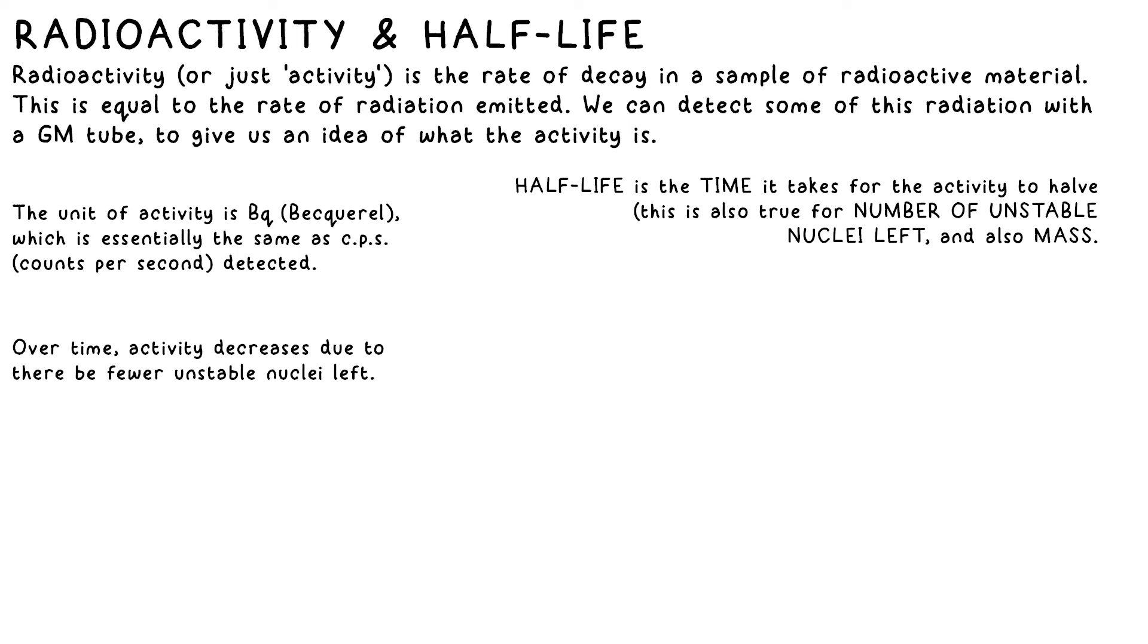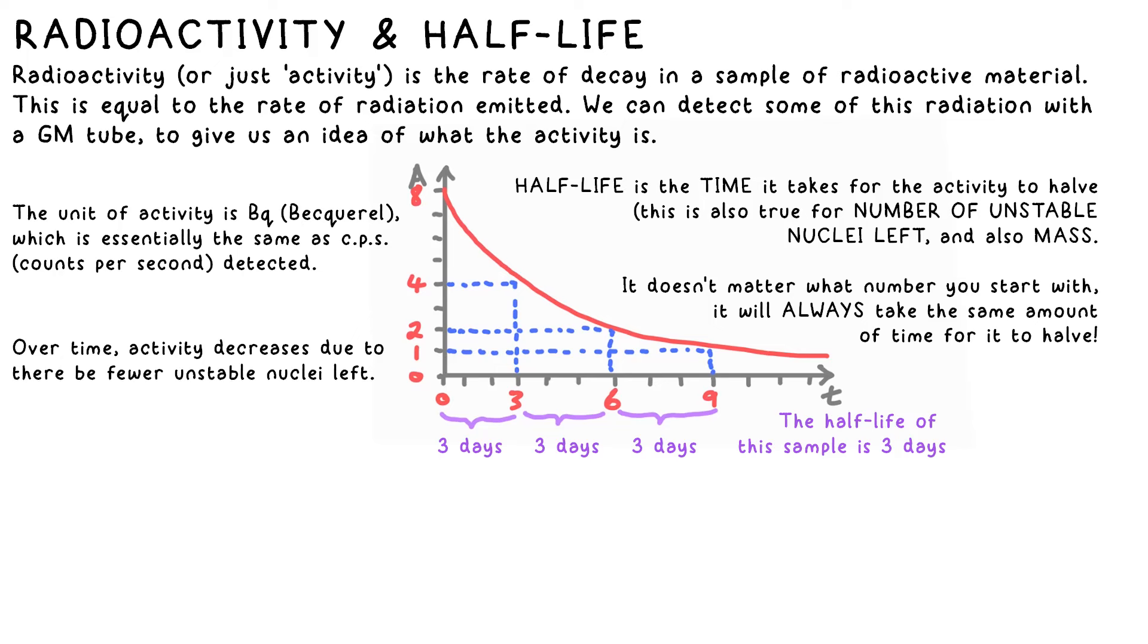The half-life of a radioactive isotope could be days, months, even millions of years long. If we draw a graph to show how activity changes over time, it might look something like this. How do we find the half-life? Well we take the initial number, halve it, then draw a line to the curve to see how long that took. What's interesting is that if we do the same again, it will take the same amount of time to halve. It doesn't matter how much of the isotope you have, or when you start timing, it will always take the same amount of time to halve.